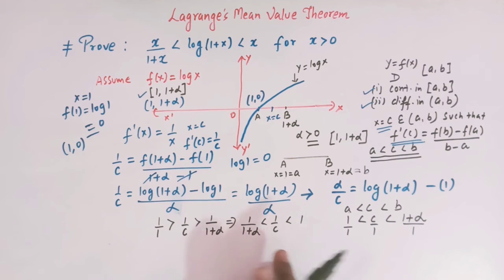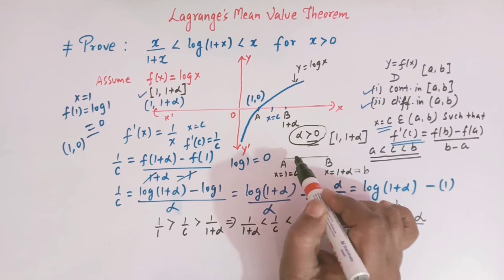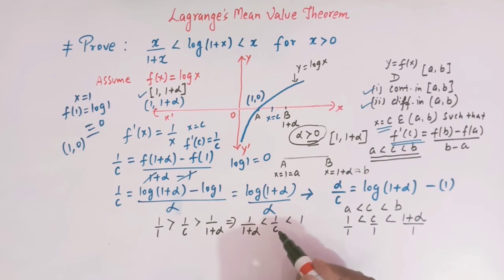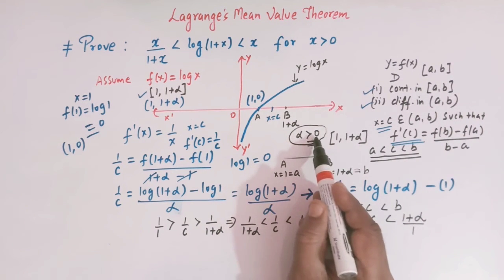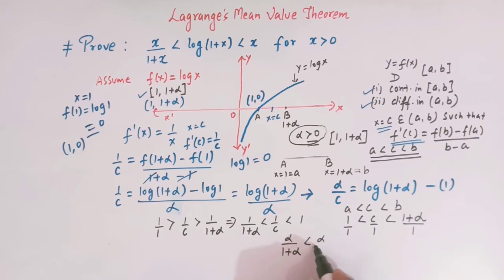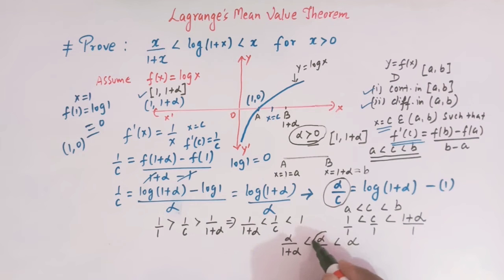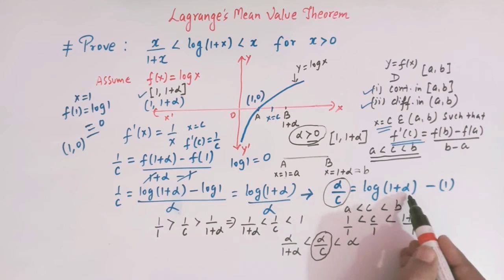Now we will multiply this inequality throughout by alpha. Since alpha is a positive number greater than 0, the direction of the inequality remains the same. Multiplying each term by alpha gives: alpha/(1+alpha) < alpha/c < alpha. We multiplied by alpha because we have alpha/c here, and we can now replace alpha/c by log(1+alpha) from equation 1.